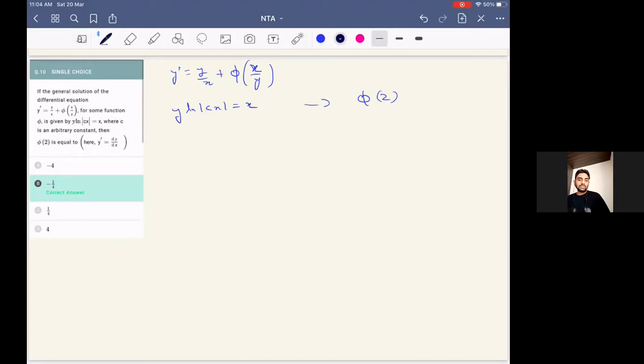So we can just differentiate the given equation, then compare to find the expression phi or the function phi. So let's do that. When we differentiate it using product rule, we are going to get y dash ln mod cx plus y c by cx equal to one.